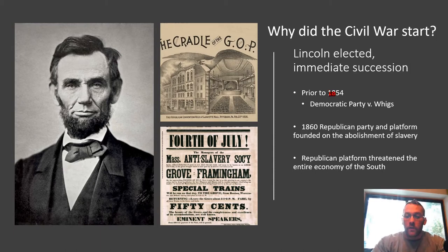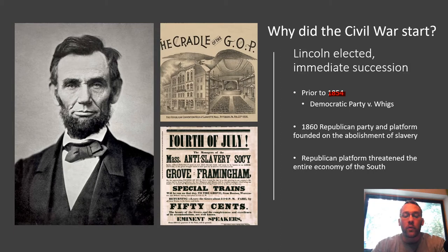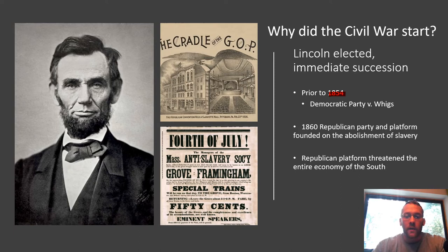Prior to 1854, so going back six years before Lincoln's elected, we have two major parties in the United States: the Democrat Party and the Whigs. The Democrat Party was the pro-slavery party, mostly in the South, pro-slavery. And if they weren't pro-slavery, they were pro-allowing Southern states to vote and decide their own laws with regard to the issue of slavery.